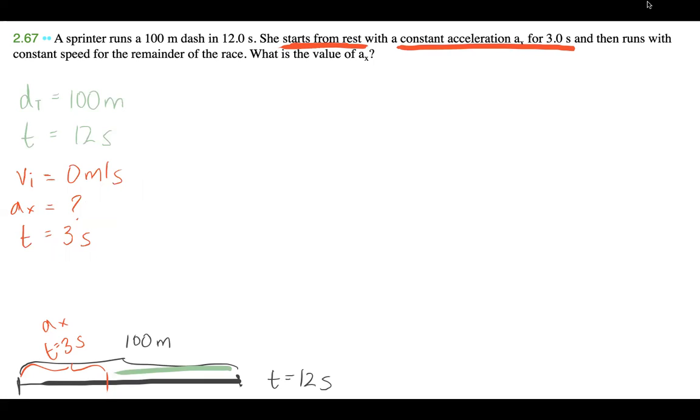And we don't know what d is, we don't know what this distance is right here. And we also don't know what final speed she finishes with. Now, for this second portion, what we know is that she is running with a constant speed of vf. And that is something we don't know, but we know that this same speed as this. And we also know that the time she runs this constant speed for is nine seconds.